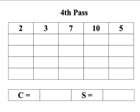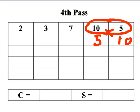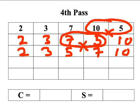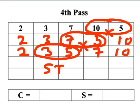Here we are with the numbers as they were at the end of the third pass: 2, 3, 7, 10, and 5. For the fourth pass, I start by comparing the numbers in positions four and five. Ten is bigger than five, so I swap over and fill in the rest of the numbers for completeness. Now I compare positions three and four — seven is bigger than five, so I swap over. Now I compare positions two and three. In this case, five is bigger than three, so there's no need to go any further — I can actually stop the algorithm here.